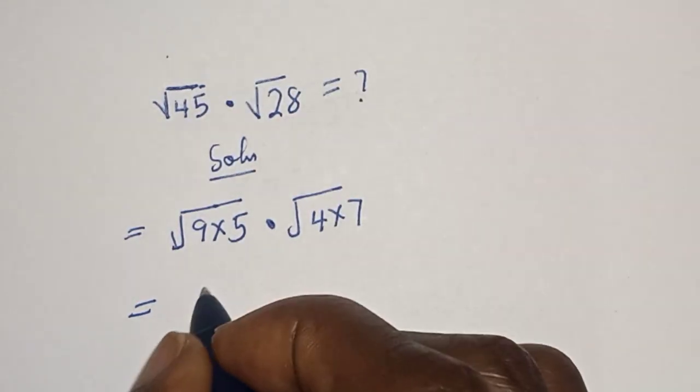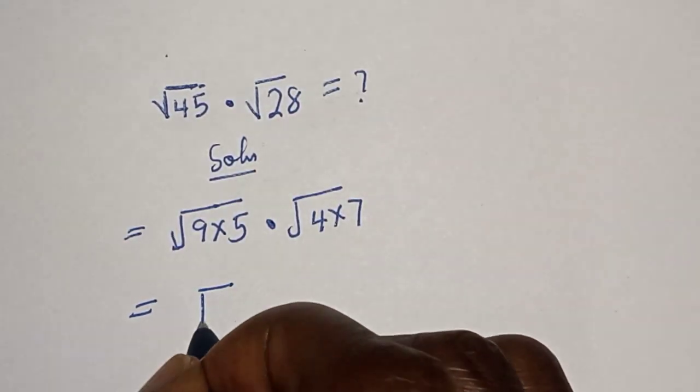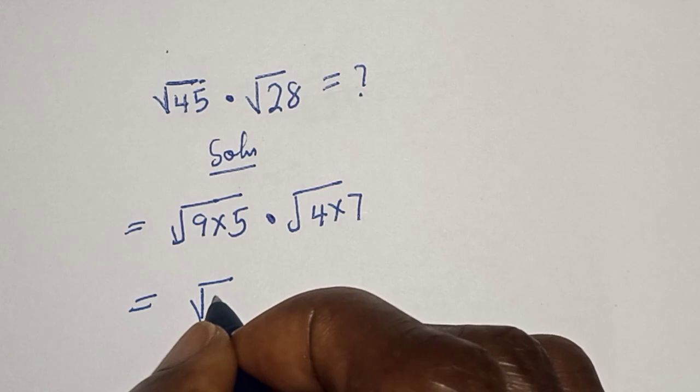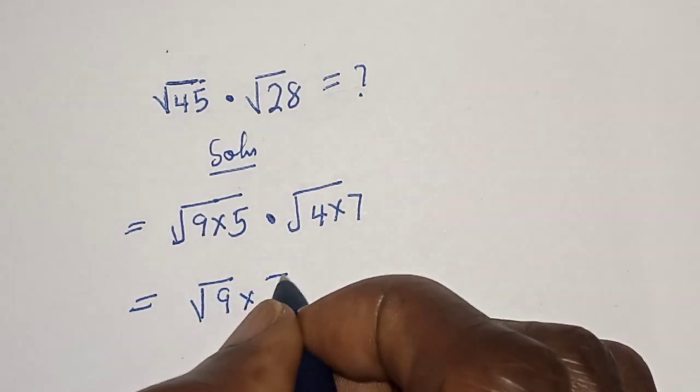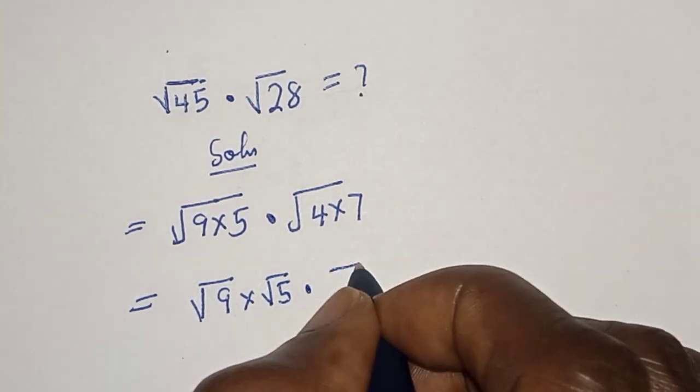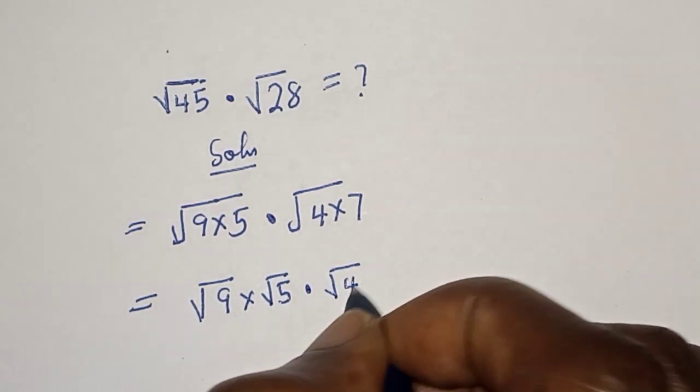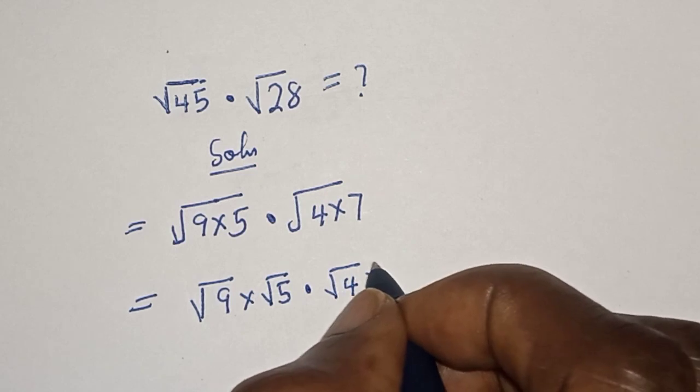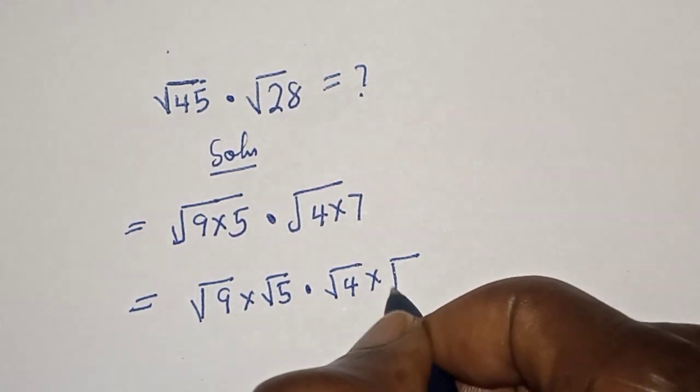This is equal to square root of 9 multiplied by square root of 5 multiplied by square root of 4 multiplied by square root of 7.